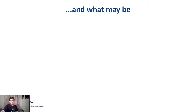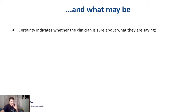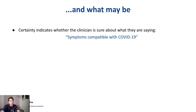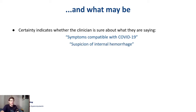Another interesting phenomenon is uncertainty, or just certainty. Uncertainty indicates whether the clinician is sure or isn't sure about what they're saying. For example, if they say that a patient has symptoms compatible with COVID-19, we can't say the patient has COVID-19 for a fact, or that they have a suspicion of internal hemorrhage.